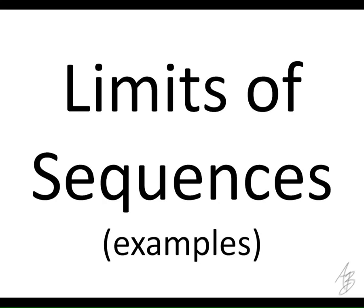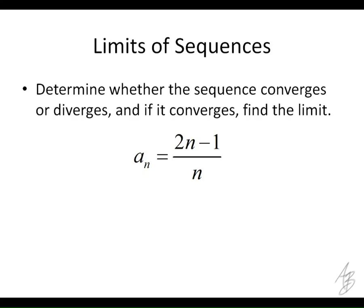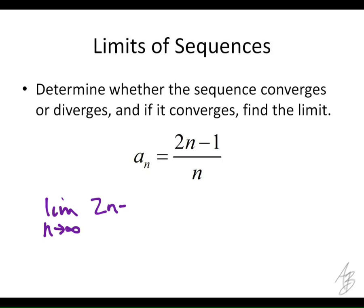Now let's look at some examples of sequences and see if we can find the limits. The first one is a_n equals (2n minus 1) over n. We want to know if the limit converges or diverges, and if it converges, we want to find the limit. So what we're essentially looking for is the limit as n approaches infinity of a_n, which we replace with (2n minus 1) over n.